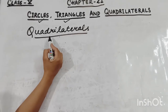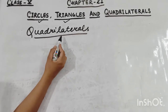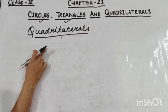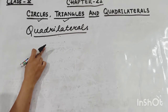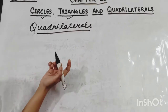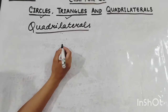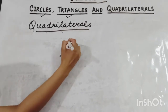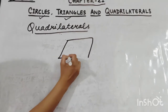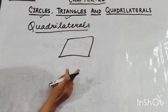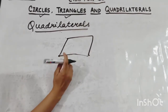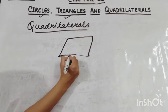Quadrilateral kya hota hai? It is a closed figure bounded by four line segments. A closed figure jo aapka chaar line segments se banta hai. Suppose this is a figure — there are four line segments in this figure.